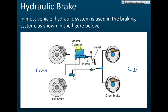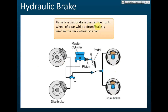Since 90% of the braking effect comes from the front part of the car, only the front part needs a good brake. The back ones don't need a very good brake, so therefore the back uses drum brake. For racing cars, both front and back use disc brakes, but for normal vehicles only the front wheel uses disc brake and the back uses drum brake. A disc brake is used in the front wheel while a drum brake is used in the back wheel.